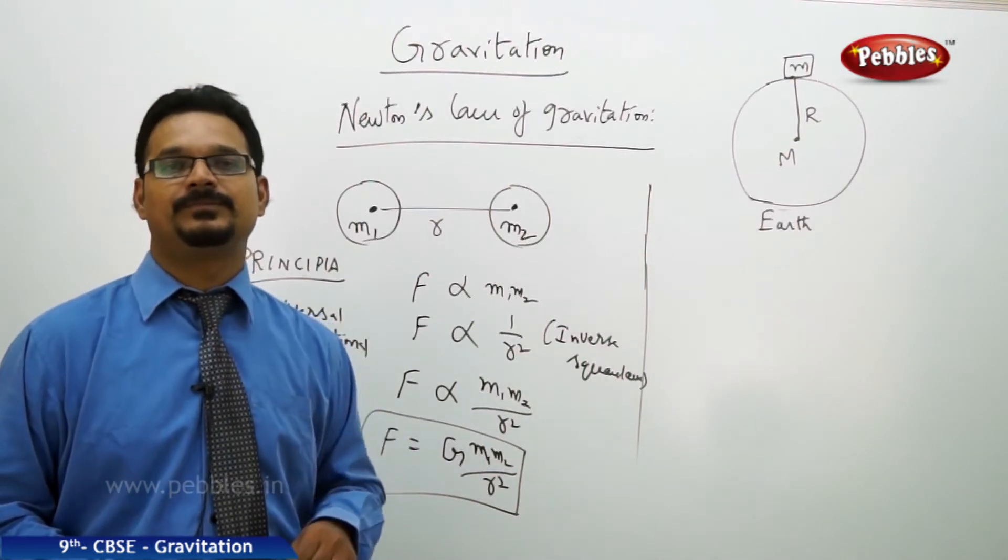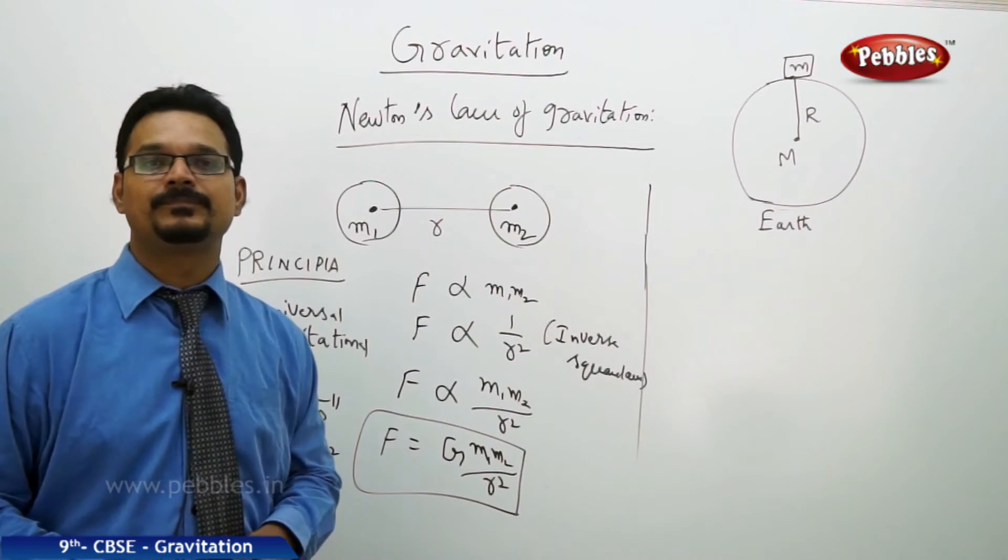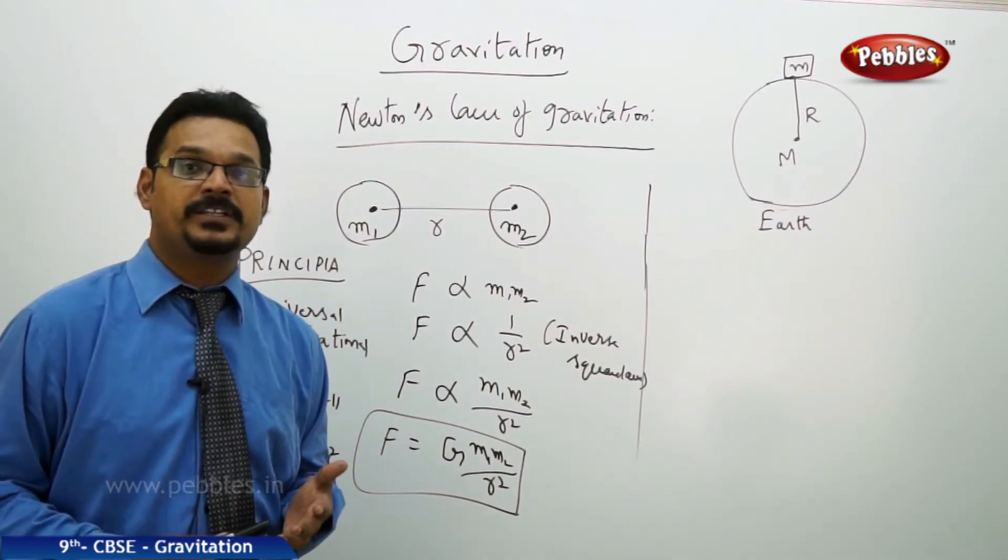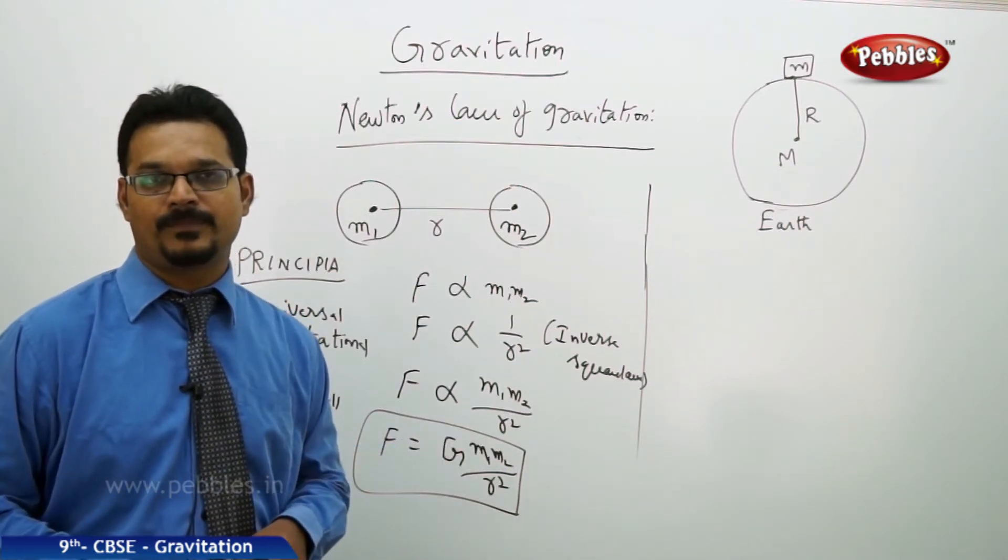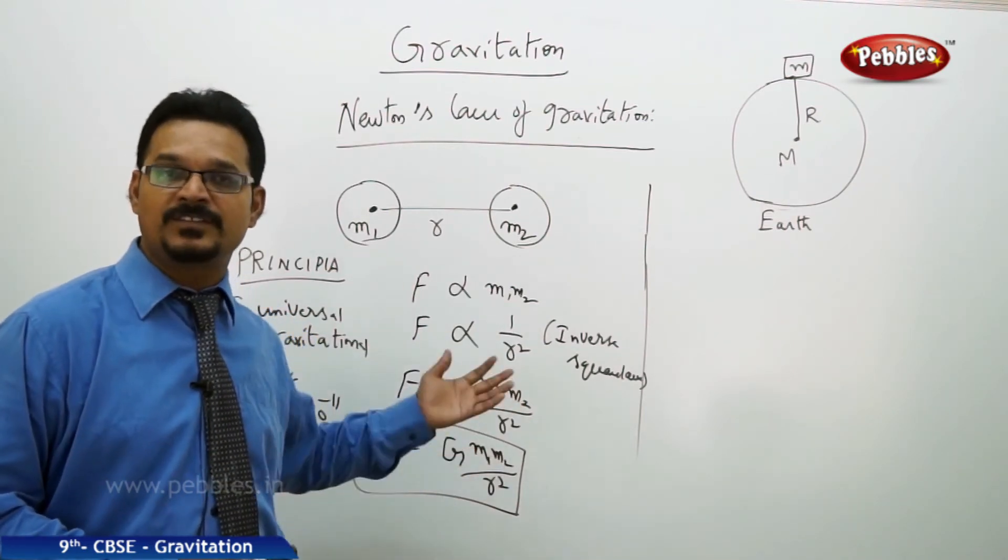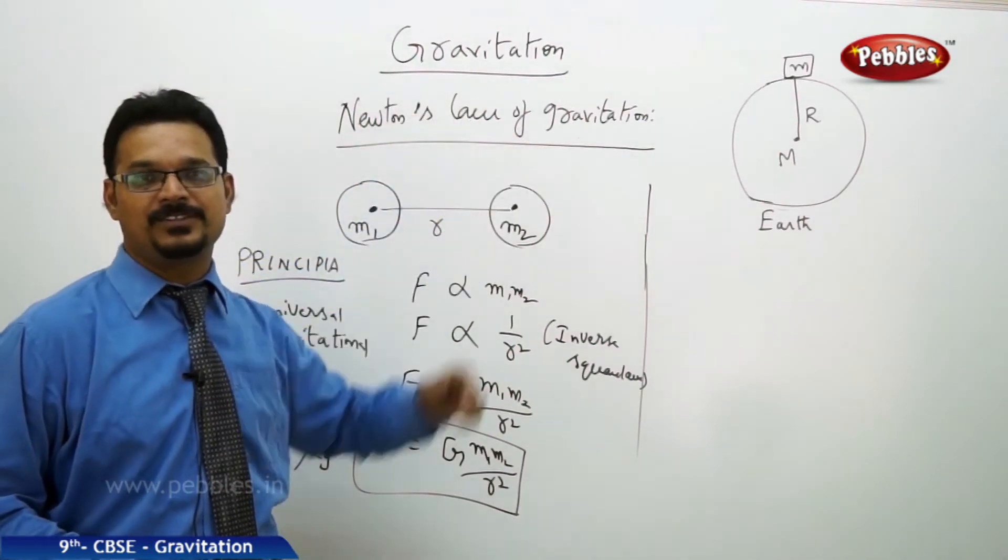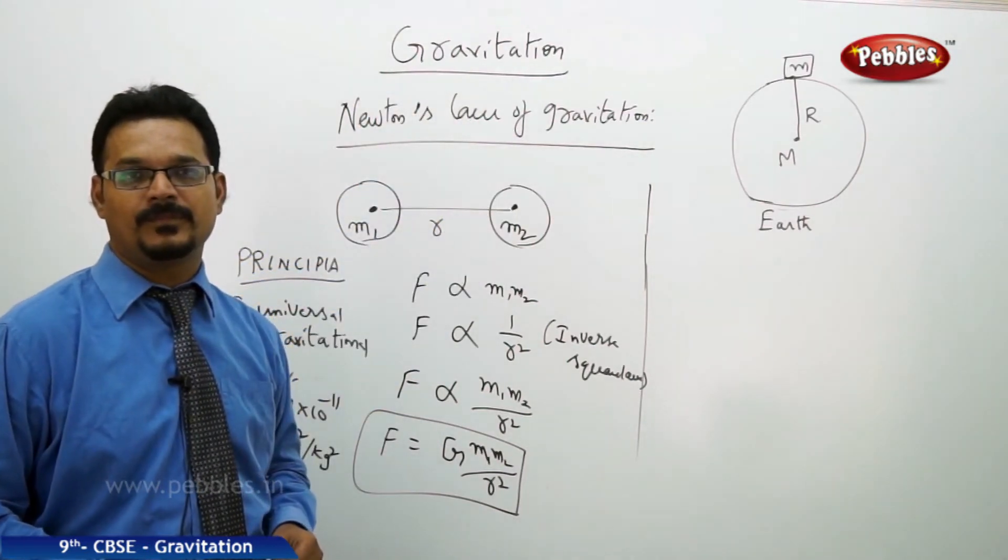But the surprising thing is that this formula can be applicable to any two massive bodies in the universe. Wherever you go in the universe, you can apply this formula. That's the interesting thing about this formula - as it is applicable universally, that's why this formula is also called universal law of gravitation.